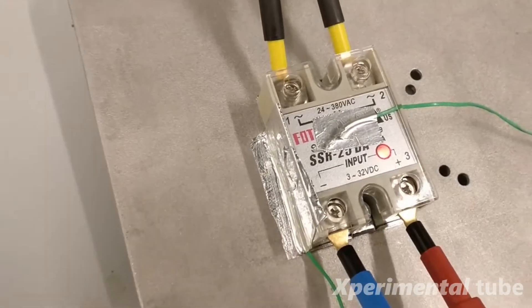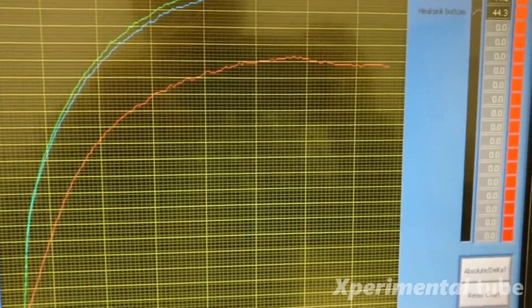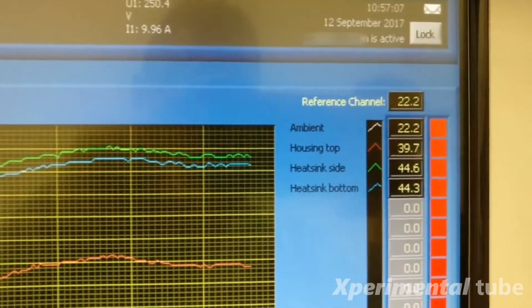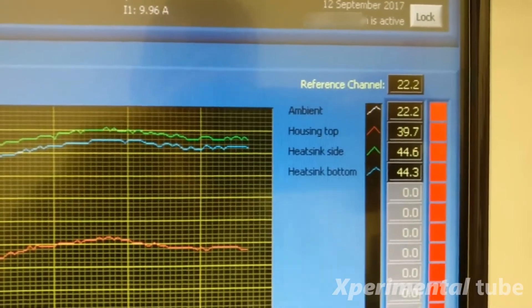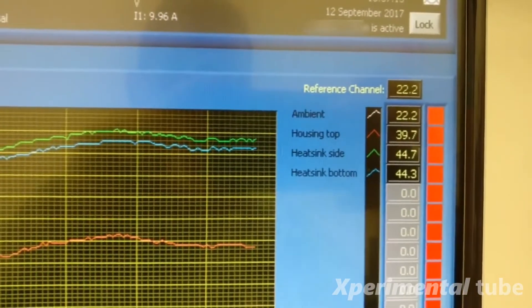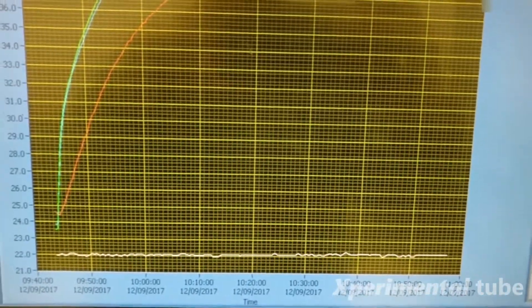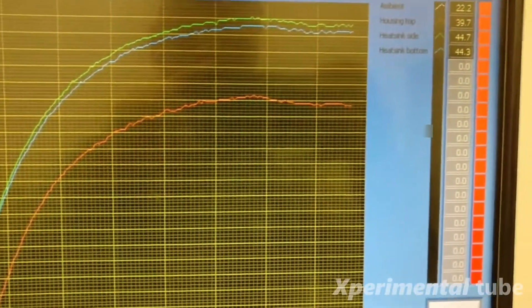So first I start with the temperature rise test and as you can see I put a thermocouple on the case and on the housing. As you can see the maximum temperature at 250 volts 10 amps is roughly 45 degrees Celsius. This is after about 2 hours of continuous working.